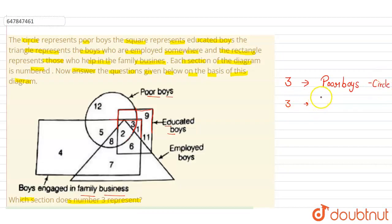Now let's see who is in our circle. What is representing our circle? Educated boys. And this is our rectangle, which shows who is helping in family business. So this is our rectangle helping with family business.